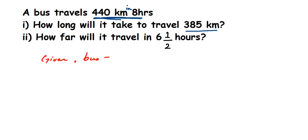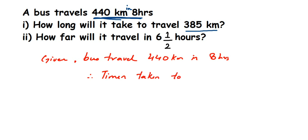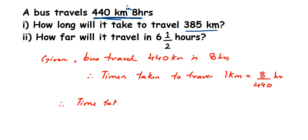The bus travels 440 kilometers in 8 hours. Time taken to travel 1 kilometer equals 8 divided by 440 hours. Once we have the value for 1 kilometer, we can find for 385 kilometers. Therefore, time taken to travel 385 kilometers equals 385 multiplied by 8 divided by 440 hours.